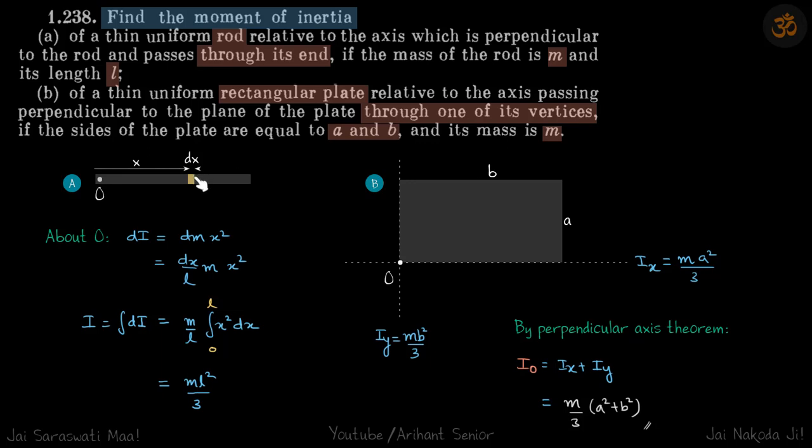dm can be written as dx upon total length into mass times x square. So we integrate that and we get the result ml square by three.